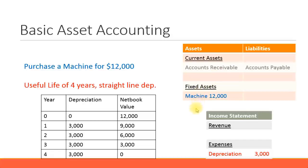So you have general ledger. General ledger consists of all entries in your financial statements, including your balance sheet and P&L. You have accounts receivable, you have accounts payable, you have bank accounting, and then you have asset accounting.